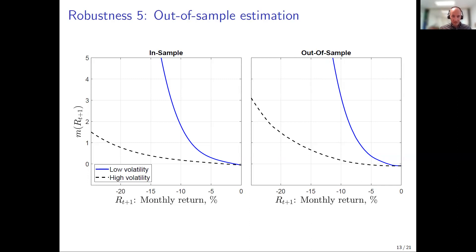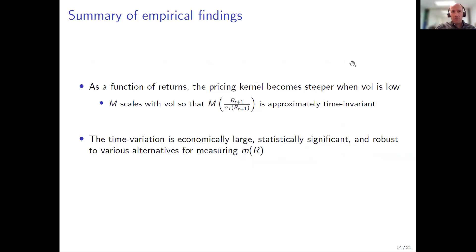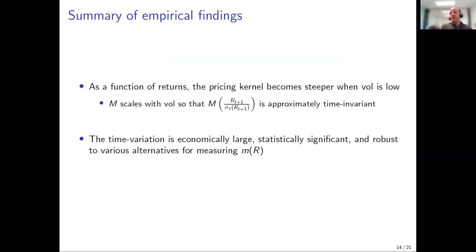Summary of empirical results: as a function of returns, the pricing kernel becomes steeper when volatility is low, meaning any given negative return is more painful to investors. The special case (a=0, b=1) — computing the pricing kernel as a function of standardized returns — provides a very good fit to the data. As a stylized fact: the pricing kernel scales one-to-one with volatility. The differences are large, significant, and robust to different ways of measuring the pricing kernel.